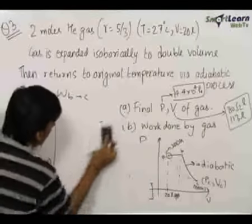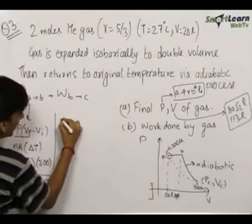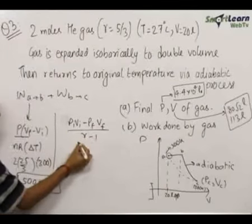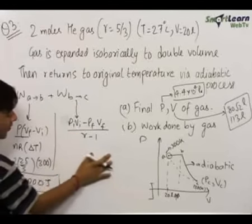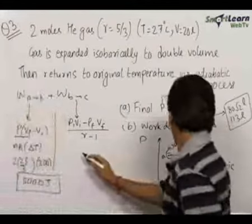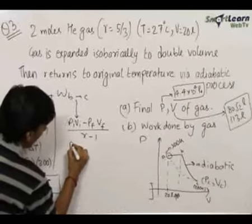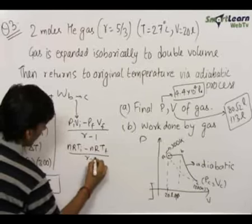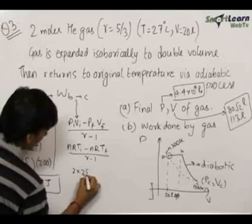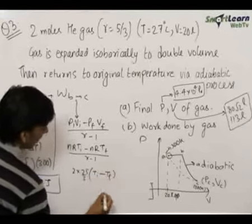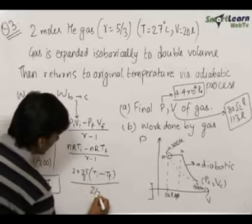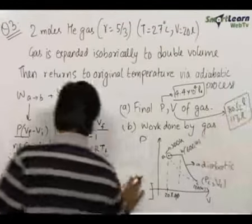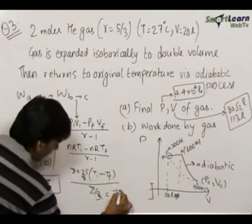We now find the work done by the gas from B to C. B to C is an adiabatic process. For an adiabatic process, work done = (P_initial × V_initial − P_final × V_final) / (γ − 1). This can be rewritten as nR(T_initial − T_final) / (γ − 1) = 2 × (25/3) × (T_B − T_C) / (2/3). T_B was 600 Kelvin and T_C is 300 Kelvin, so 600 − 300 = 300, giving work from B to C equal to 7500 joules.